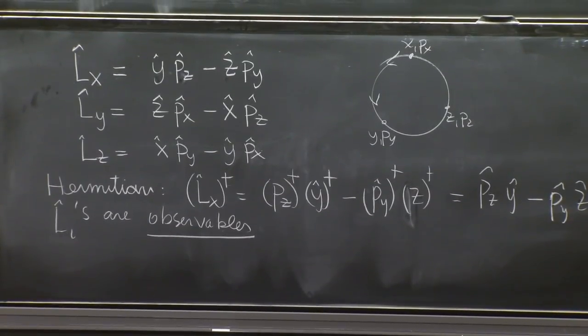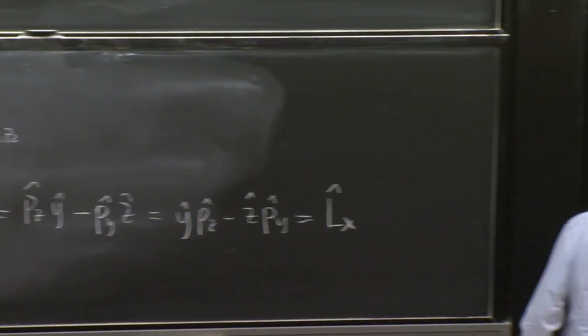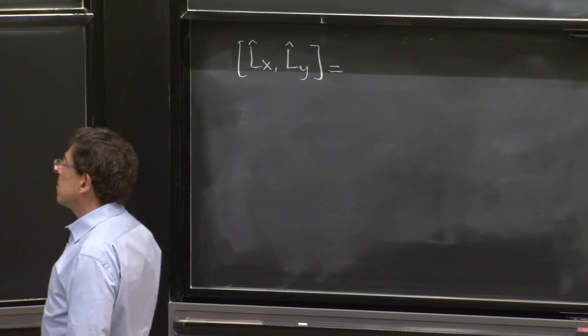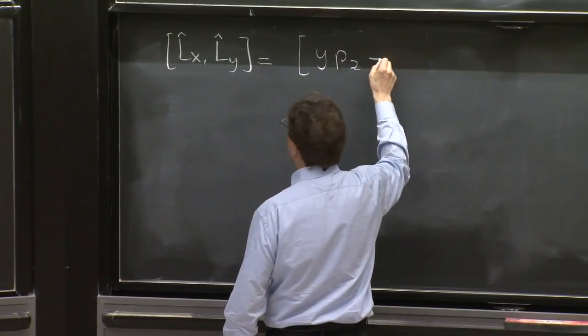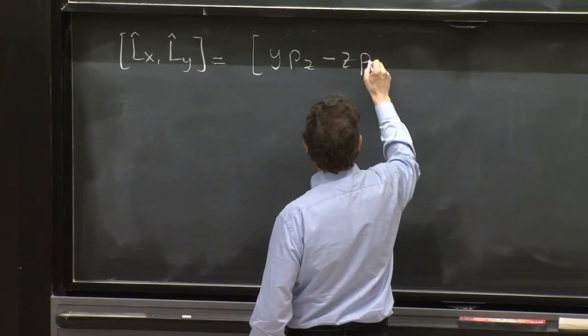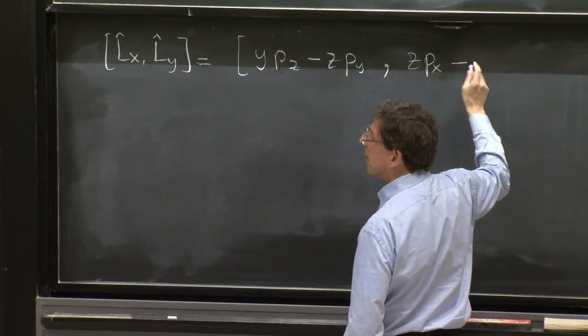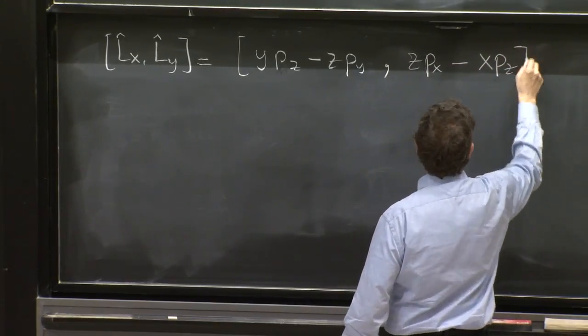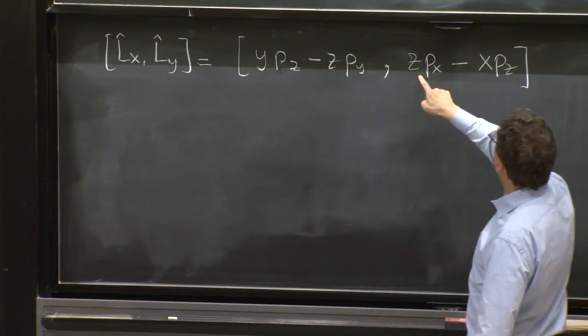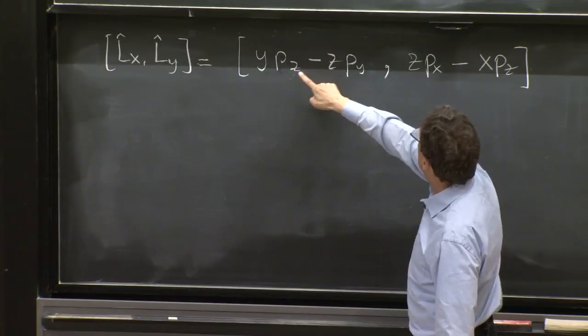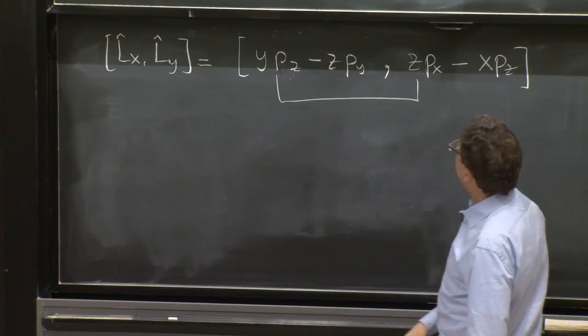So we'll do Lx with Ly. Try to compute the commutator. So Lx is y pz, let me forget the hats for simplicity, minus z py. And Ly is z px minus x pz. Here is a y. The y commutes with everything here, so the y doesn't care. The pz gets stuck with the z and doesn't care about this. So this term just talks to that term.